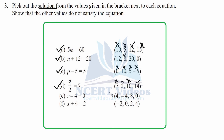For part e, r minus 4 equal to 0: placing 4 gives 4 minus 4 equals 0 — we get our solution immediately. We don't need to check the rest. Confirming: minus 4 minus 4 is minus 8, not equal to 0. And 8 minus 4 is 4, not equal to 0. We have already found our solution, which is r equal to 4. Also, 0 minus 4 is minus 4, not equal to 0.